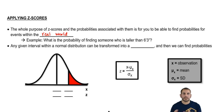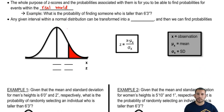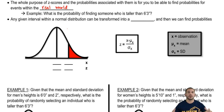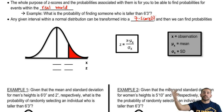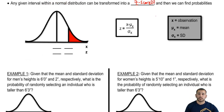We saw how to find probabilities with z-scores. Now let's bring in the concept of the x-value, converting that to a z-score and bringing it all together. Any given interval within a normal distribution — and by normal I mean the real world problem as opposed to the standard normal distribution — can be transformed into a z-score. So we can have two x-values, get two z-scores, and find probabilities based on those z-scores that are associated with the x-values.